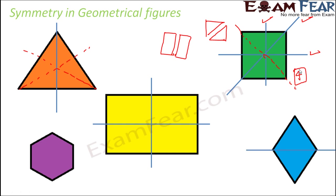Look at this image of a kite. Here again, you have a horizontal line of symmetry and also a vertical line of symmetry. But when you look at any other line — like this red one — do you think it would act as a line of symmetry? No, because one part is a triangle and the other part is a much larger shape, so obviously the two halves are not equal.